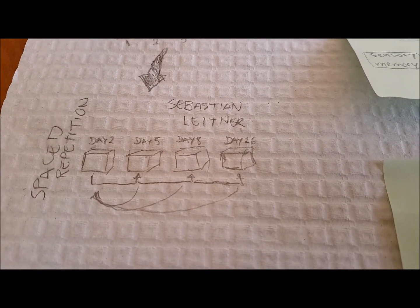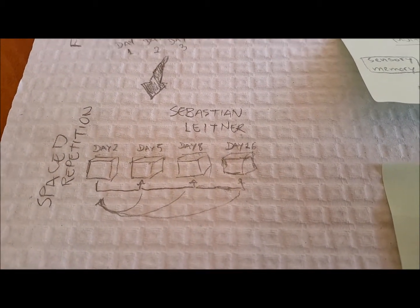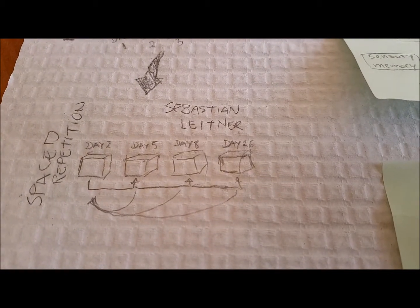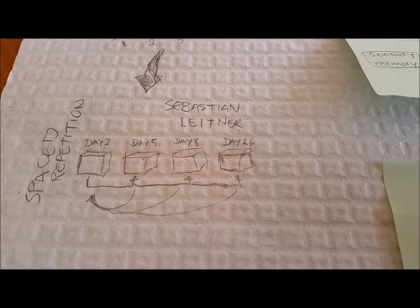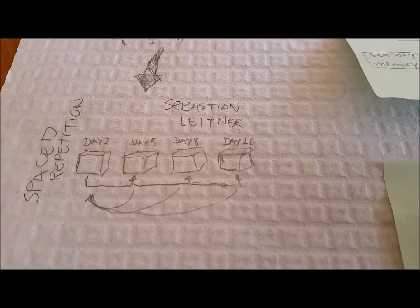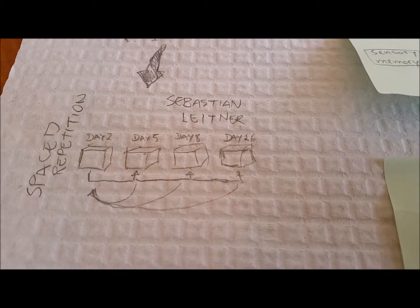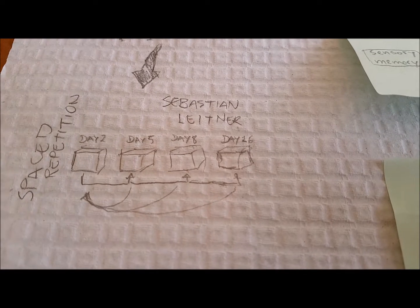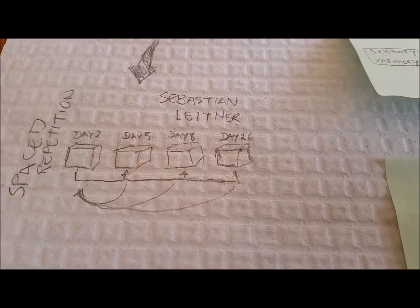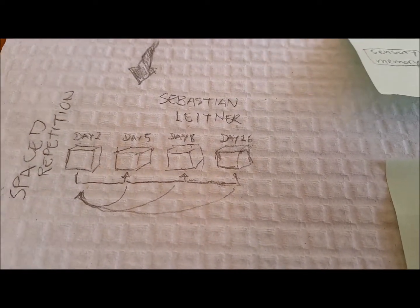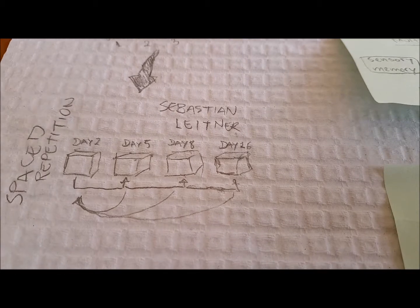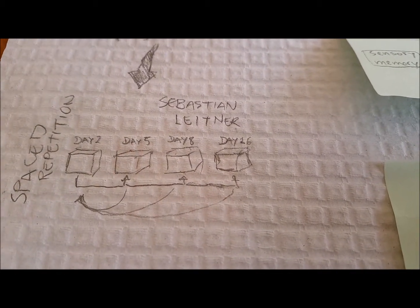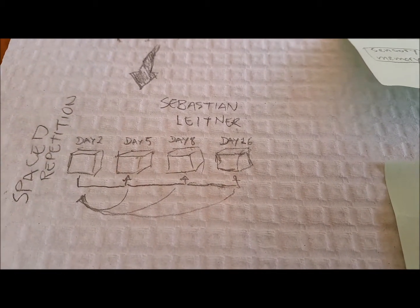So you can revise them tomorrow, and then you have to revise them a couple of days after — day 5 for example, and then day 8, and then day 16. The trick is, if you get the answers right, you can move them ahead to the next box. If you get the answers wrong, you have to go back to the first box and revise every second day.